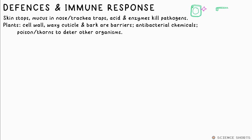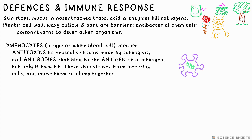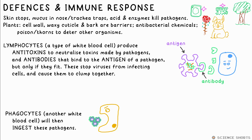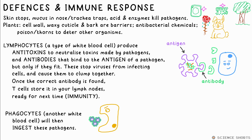Our bodies are excellent at protecting us from pathogens. Skin is the first barrier to them entering, and if they do enter your nose and trachea, they can be trapped by mucus. Acid and enzymes in your digestive system will destroy them too. If they still manage to enter the bloodstream, white blood cells are ready to combat them. One type are called lymphocytes — they produce antitoxins to neutralize the poisons pathogens produce, and they also make antibodies, which stick to the antigen on a pathogen, stopping them from infecting more cells and making them clump together. Phagocytes are then able to ingest and destroy them. An antigen on the surface of a pathogen has a specific shape, so only an antibody that fits it will neutralize it. If pathogens are unknown to the immune system, lymphocytes will start making all sorts of different shapes until one fits. Your immune system will then store a copy of this antibody next to the antigen, so it's ready to stop it next time — you now have immunity.